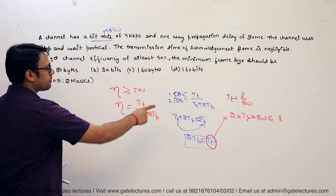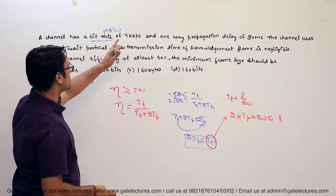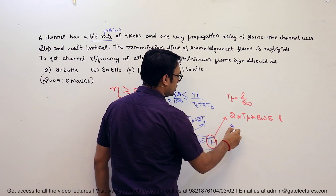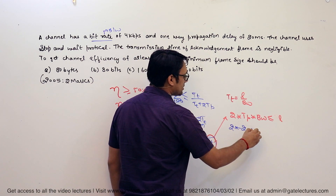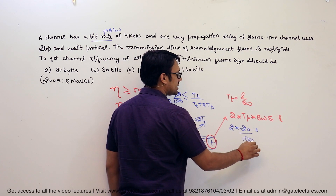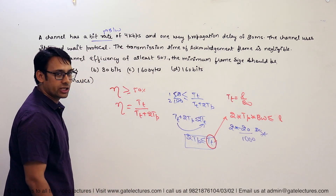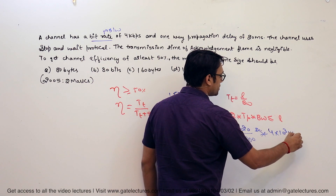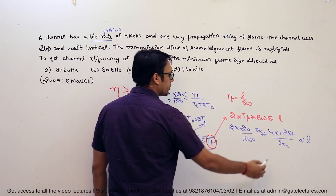They have already given the propagation delay and the bandwidth of the network: bandwidth is 4 kbps and propagation delay is 20 milliseconds. Substituting these values: 2 multiplied by propagation delay (20 milliseconds, or 20/1000 seconds) multiplied by bandwidth (4 kbps = 4×10³ bits per second) should be less than or equal to L. The seconds in numerator and denominator cancel out.